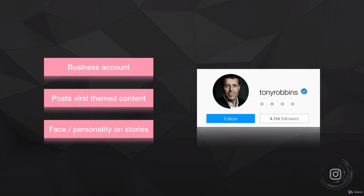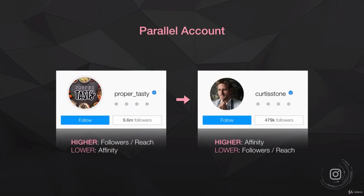One last thing: if you couldn't quite decide on your account type, there's a bonus hack called a parallel account. For example, Curtis Stone is a chef in Australia — a blend of personal and business account. He's the face of it and sells products, so he has high affinity. However, his followers and reach are lower because his content around cooking and his personal life isn't as viral.